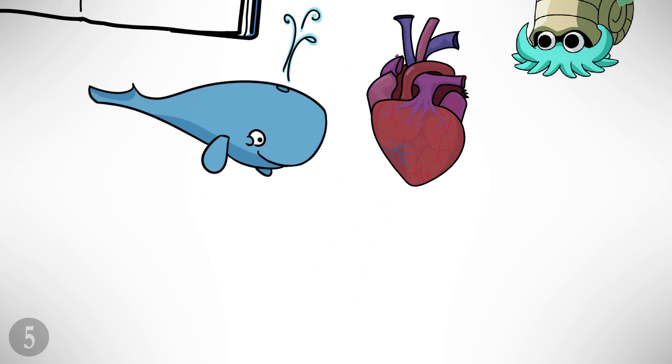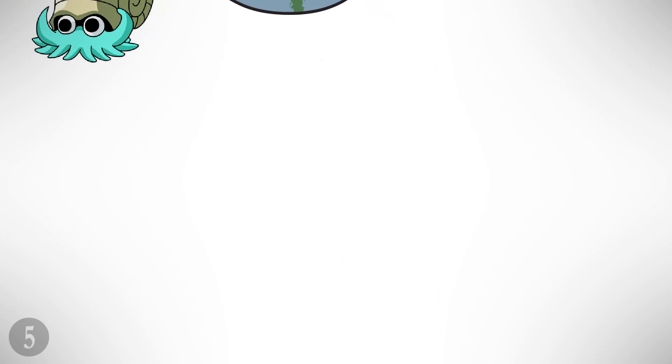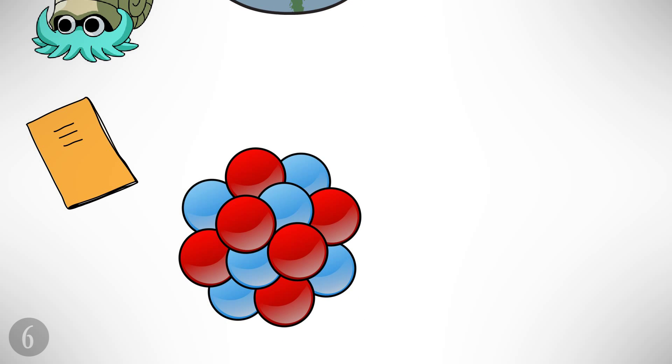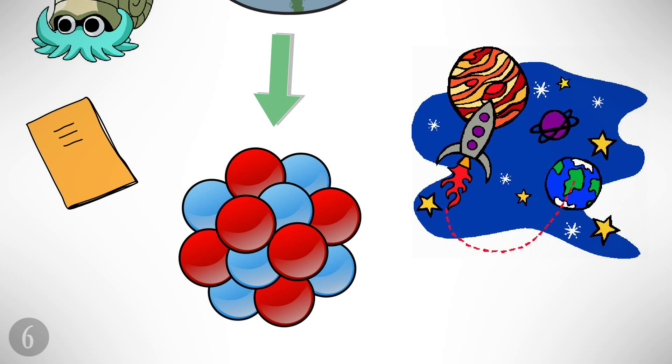Number five: a great blue whale's heart is the size of a car. Number six: Carl Sagan in his book Cosmos raised the possibility that if you travel downwards into an electron, you might find that it contains a universe of its own.